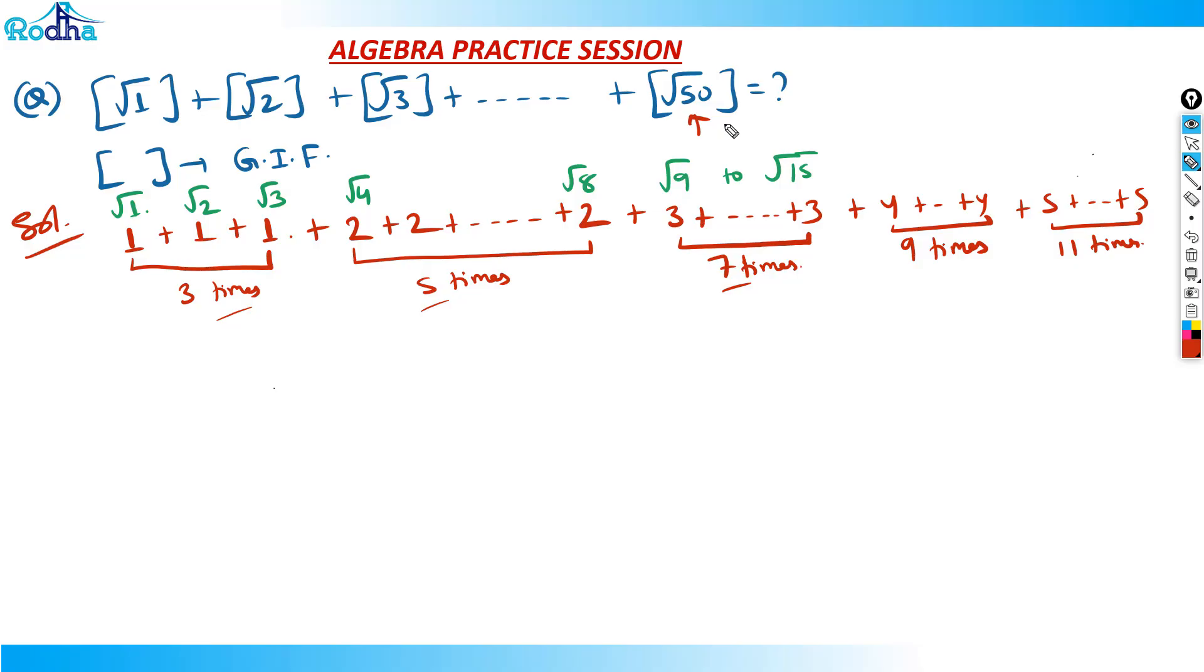So 6 will appear 13 times, from root 36 to root 48. But now I am left with only 2 values - root 49 and root 50. Both values are 7, actually, so 7 plus 7. We should add it up.